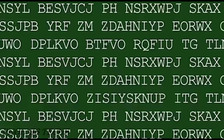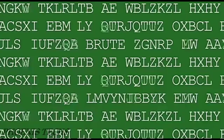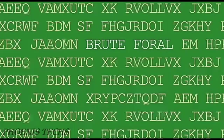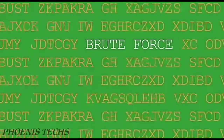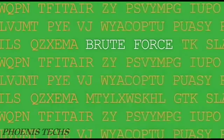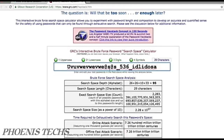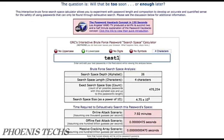In a brute force attack, each and every combination of letters, symbols, and numbers is converted into its hash form and compared with the password hash to be cracked. You are literally taking every possible password that can exist, converting it to its hash, and checking if the hashes match. This means it literally takes forever to crack a strong password using this method. However, if the computer's processing speed is fast enough, simple passwords can be cracked easily.